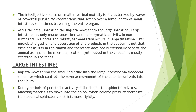After the small intestine, ingesta moves into the large intestine, which has only mucus secretions and no enzymatic activity. In non-ruminants like horse and rabbit, fermentation occurs in the large intestine, particularly in the cecum, and this microbial digestion and absorption in the cecum is not as efficient as in the rumen, so it does not nutritionally benefit the animal as much as in ruminants. The microbial population in the cecum of non-ruminants also synthesizes microbial protein, but this microbial protein is mostly excreted in the feces. The ingesta moves from the small intestine into the large intestine via the ileocecal sphincter, which controls reverse movement of colonic contents into the ileum.